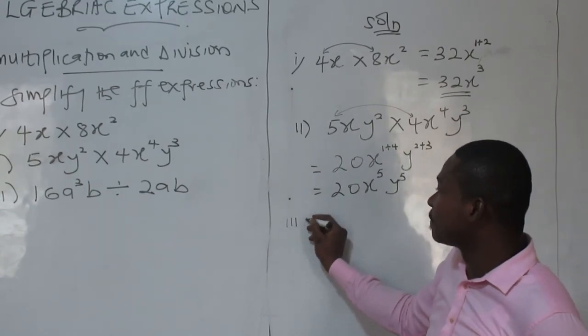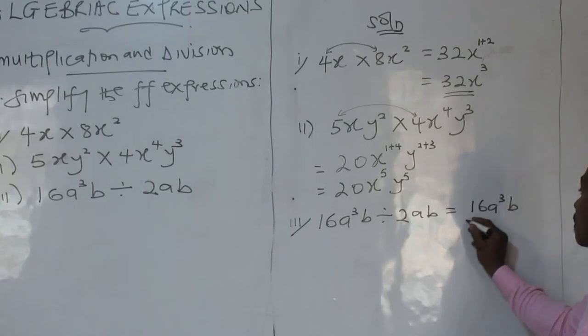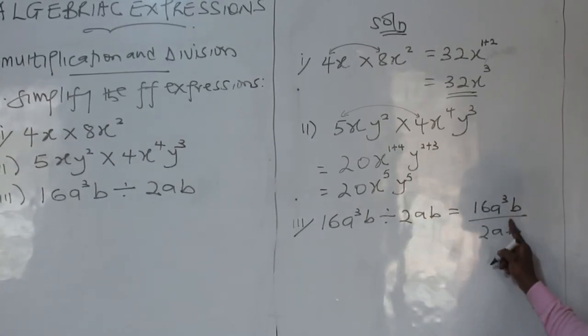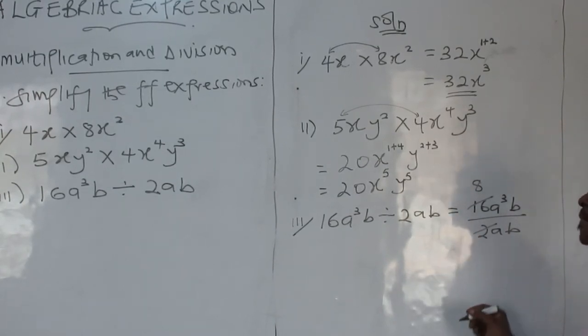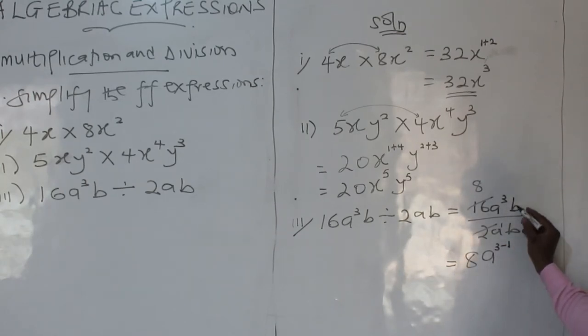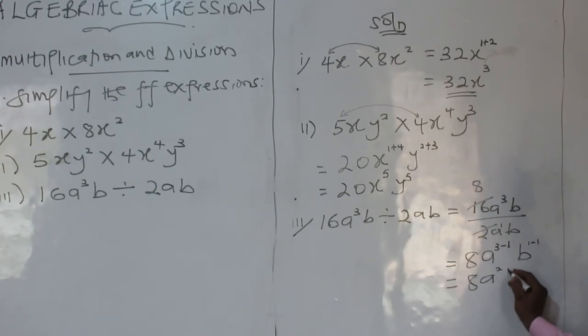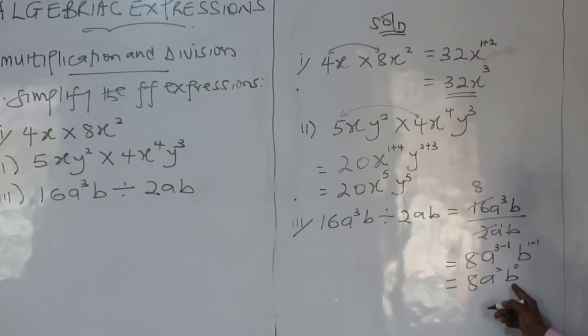Now, the third one. 16a cubed b divided by 2ab. We can present this work this way. This division sign is the same as this bar here. 2 can go here. You get 8. You can cancel out straight or still apply indices. Let's try the indices first. Indices is saying that when you are dividing and the carrier of these powers or the bases are the same, subtract their powers. So, 8. A raised to the power 3 minus 1. The 1 is coming from here. And this is b. This is also b. So b is 1 minus 1.